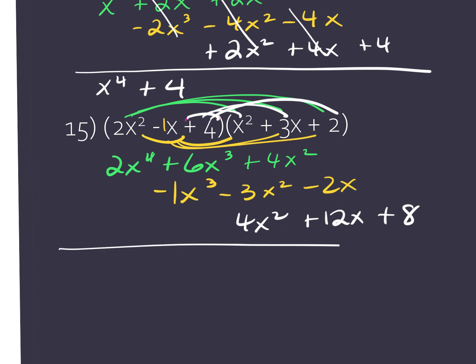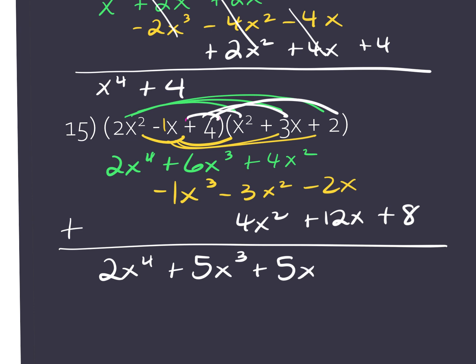Notice everything's all nice and lined up. Nothing to add to the 2x to the fourth — just write it down. I'm going to combine my x cubes. So 6x to the third minus 1x to the third gives me positive 5x to the third. Then I'm going to add up my x squared terms. So I've got 4 minus 3 is 1 plus 4 — 5x squared. And then negative 2x plus 12x — 10x. And then bring down the 8. And you're done.